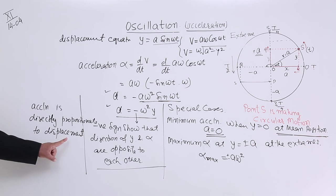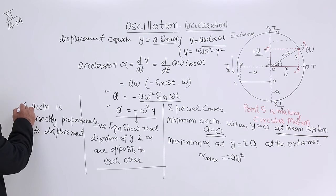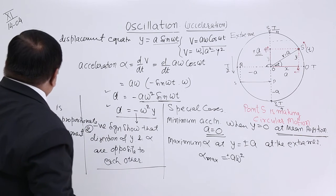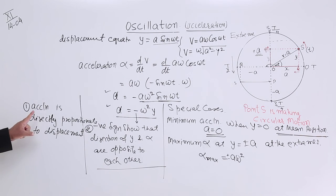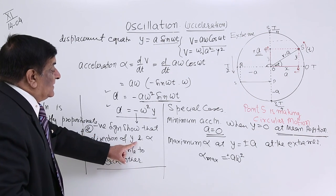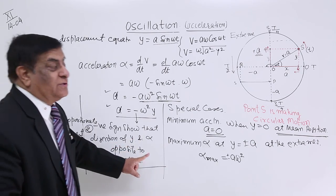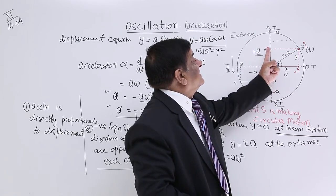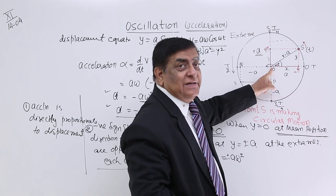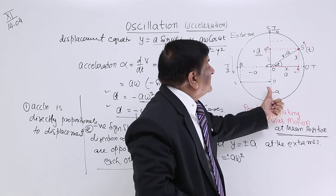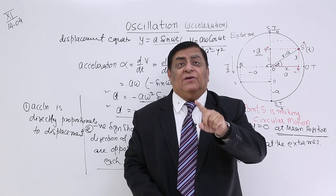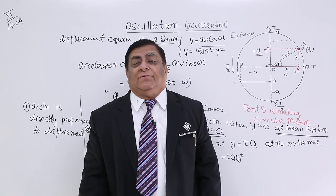So the motion of point P has this characteristic: acceleration is proportional to displacement, and the direction of displacement and acceleration are opposite to each other. That means if displacement is in one direction, acceleration is towards the center, and vice versa. Initially we wrote three conditions of simple harmonic motion — number one: acceleration should always be directed towards the center.